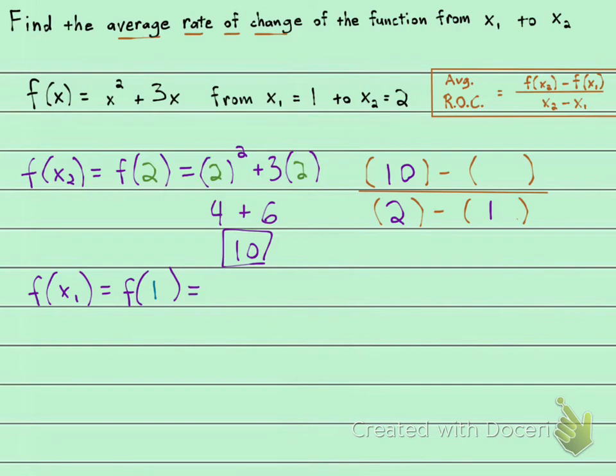Going back to the function, everywhere where we saw an x, we're going to leave a blank. x squared plus 3 times x, right here. And now we're going to plug in a 1. 1 squared plus 3 times 1.